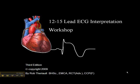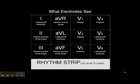On page 13 of your workbook, there's a synopsis of what the leads look at. This is an overview of what each of the individual leads looks at, and you can pause this at any time if you want to review it.